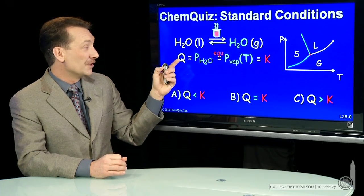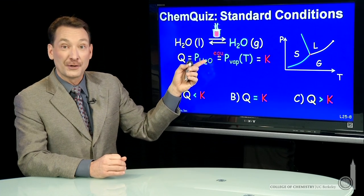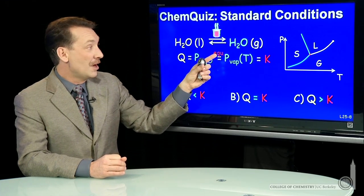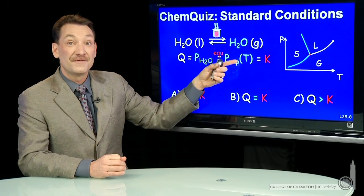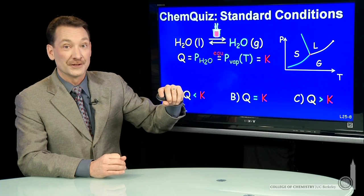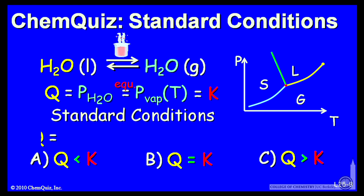We saw that the equilibrium value, Q, is equal to the pressure of water. And at equilibrium, that's the vapor pressure of water for that temperature. Well, the vapor pressure for water at that temperature is 0.03.